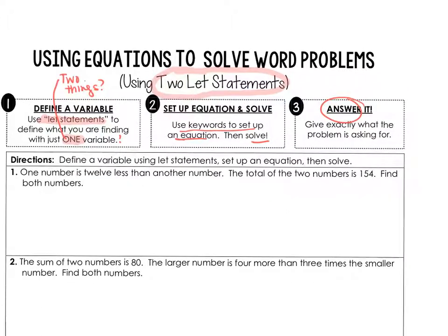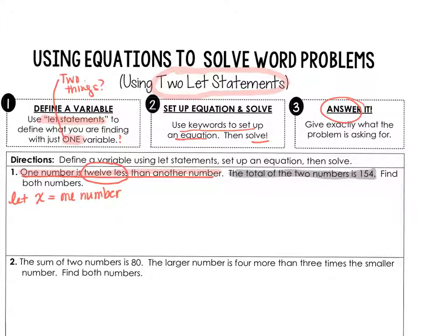Here's an example. Let's take a look at number one. It says: one number is 12 less than another number. The total of the two numbers is 154, and we have to find both numbers. This red underlined sentence is going to help us develop our let statements. So we're always going to start with 'let x equals.' x is going to equal one of the numbers — let's call it one number. And the other number is 12 less than x, so the other number is x minus 12. That's all coming from this red sentence.